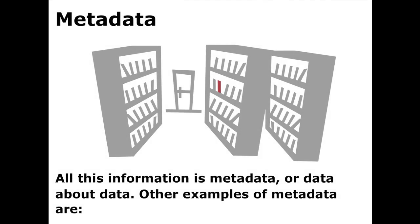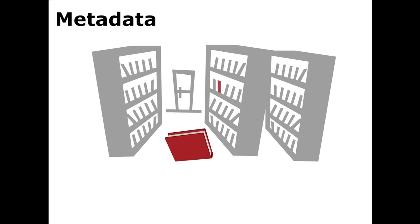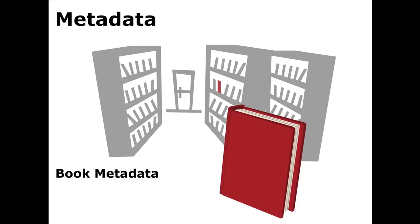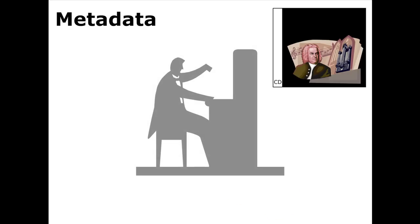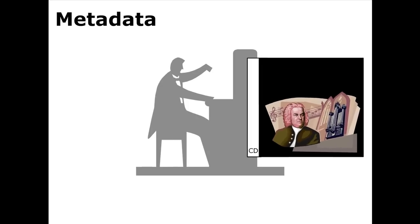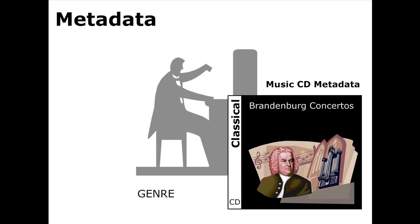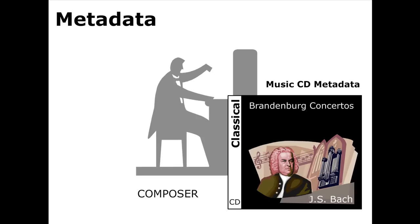Other examples of metadata are book metadata. These include subject, author, publisher, and language. Metadata about music CDs includes genre, composer, location of recording, and record label.